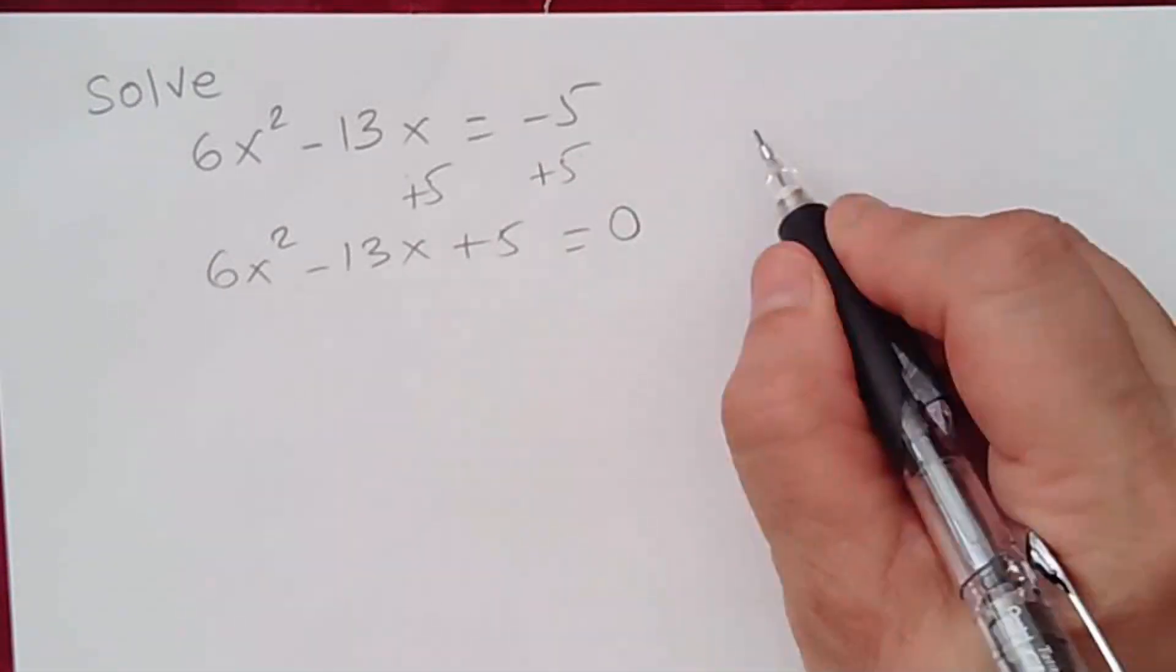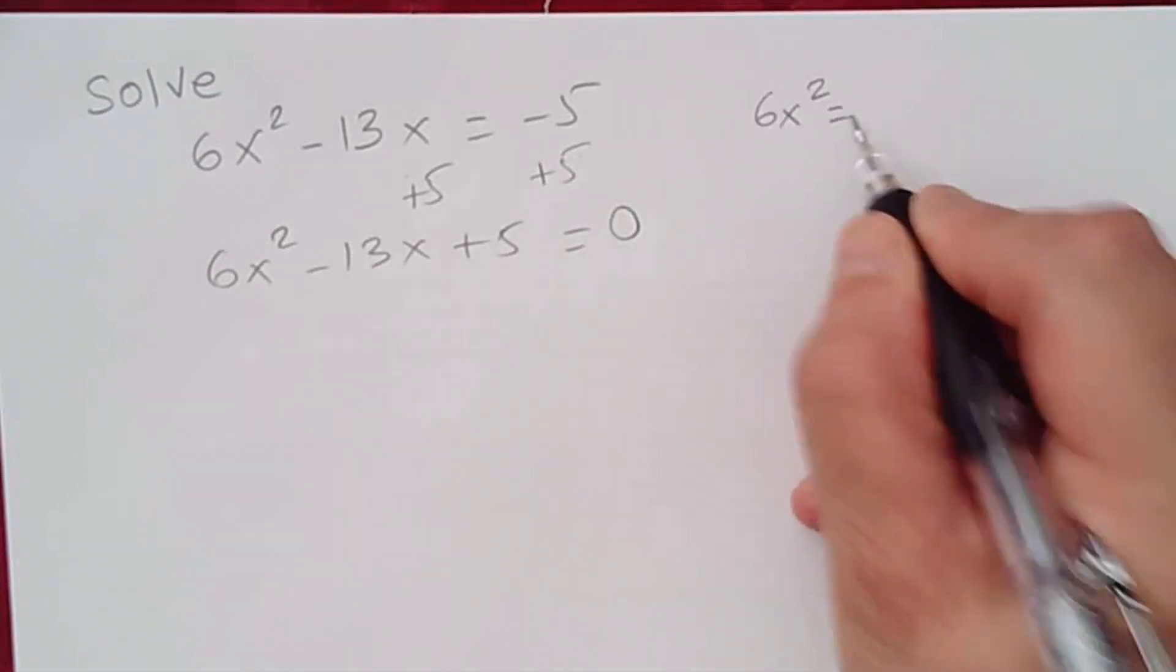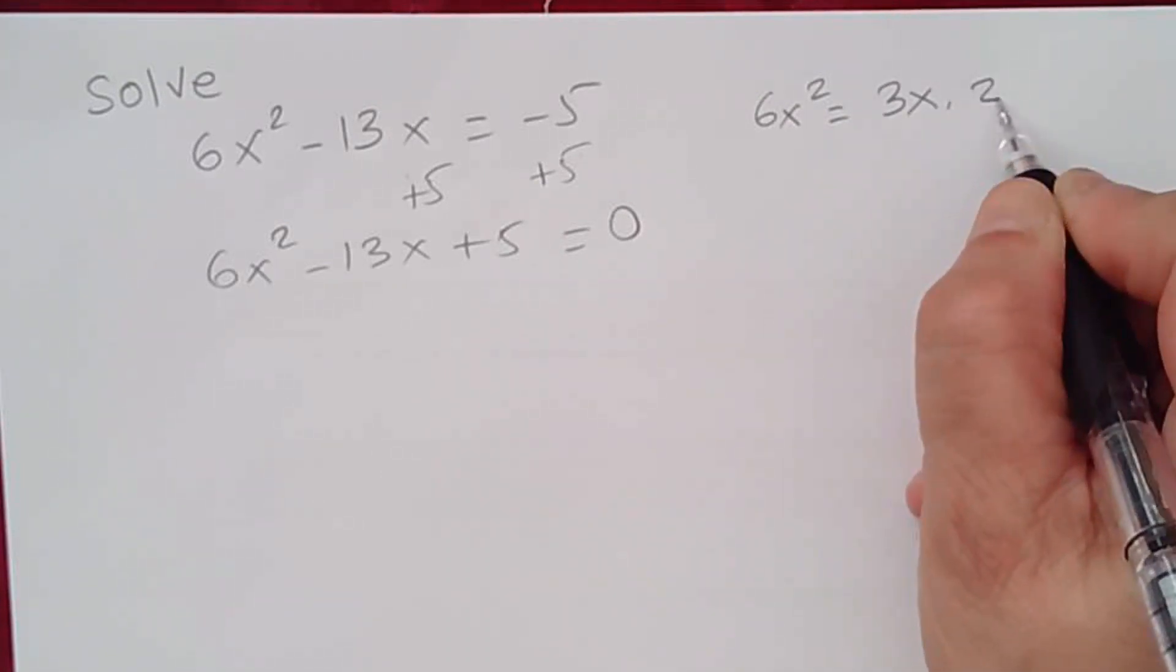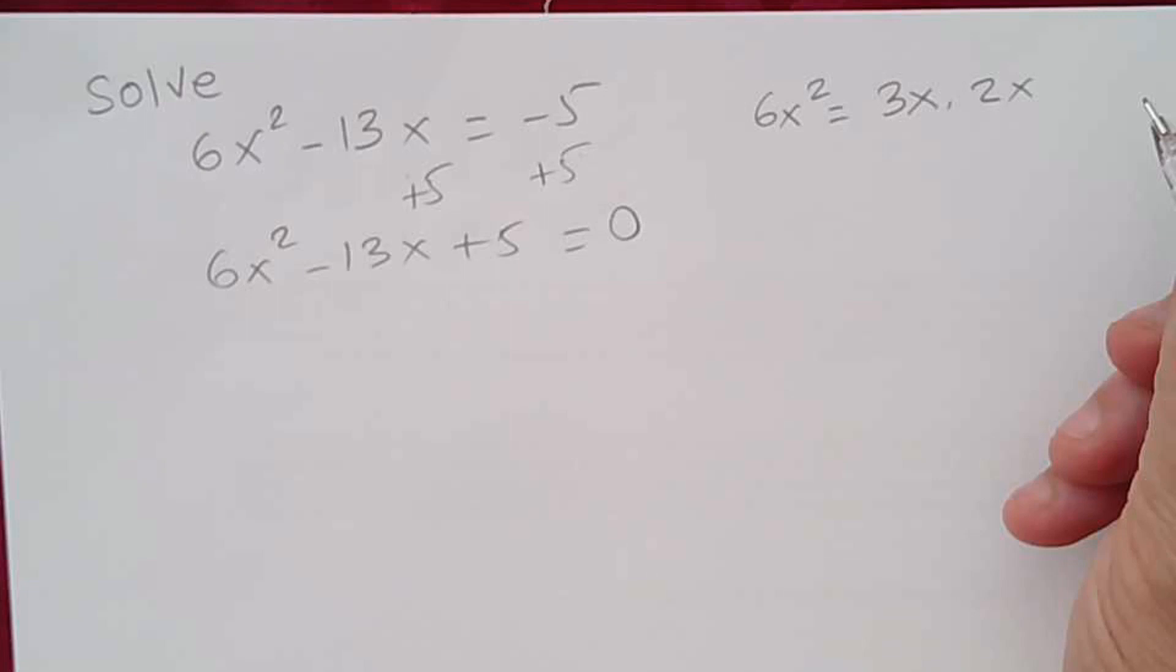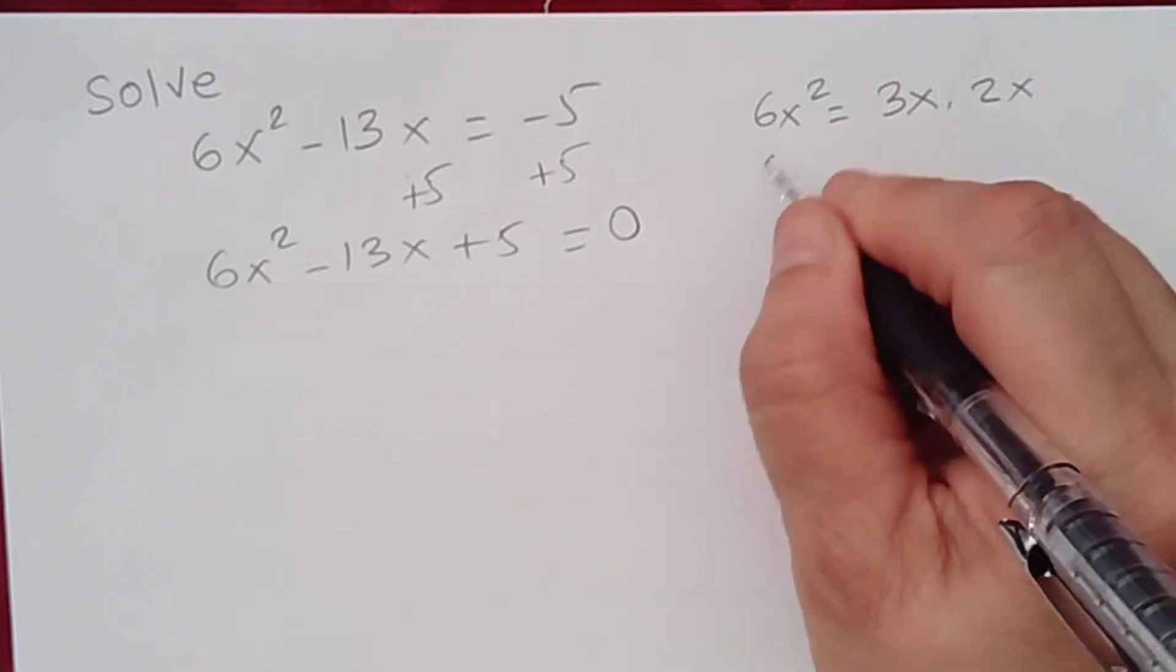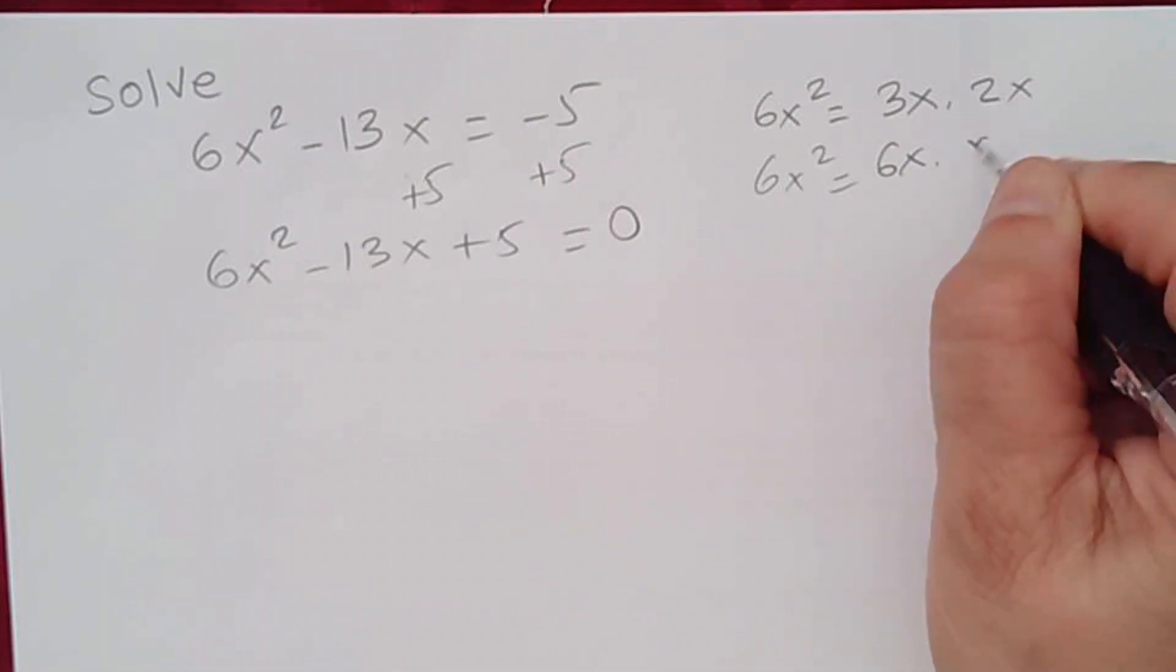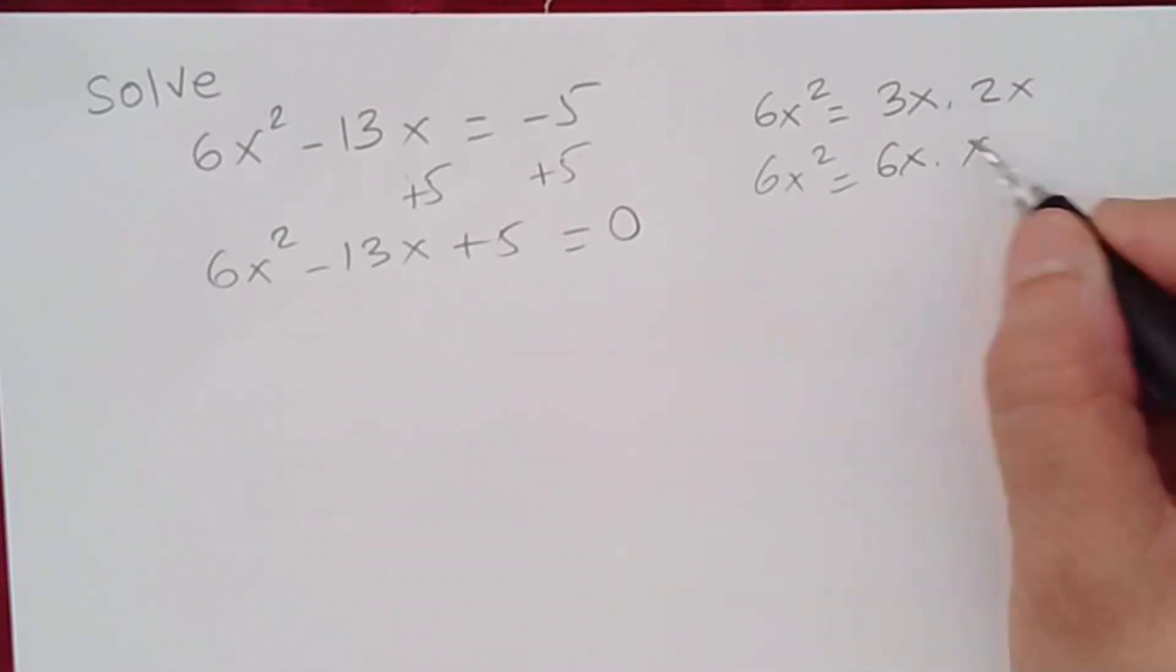So let's see. We have 6x squared. We can get 6x squared by multiplying 3x times 2x or 6x times x. OK, so either one would work.